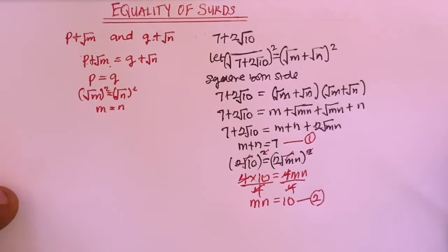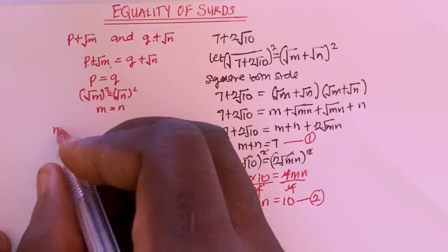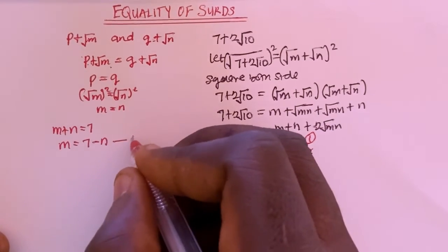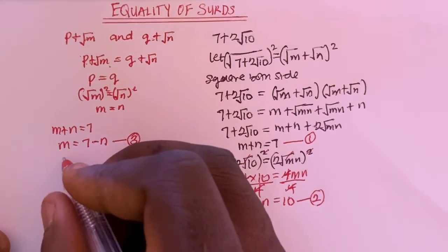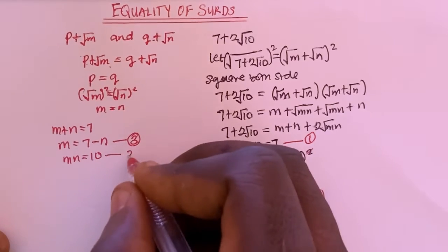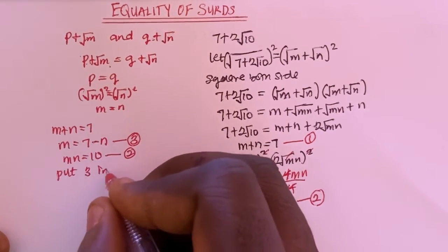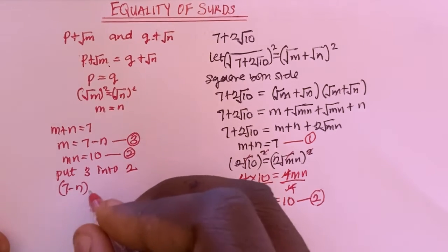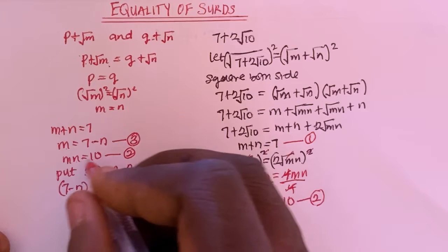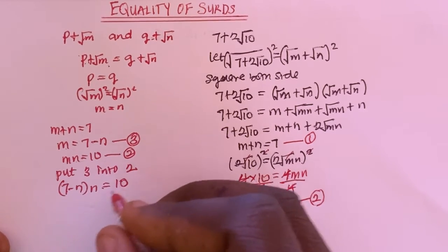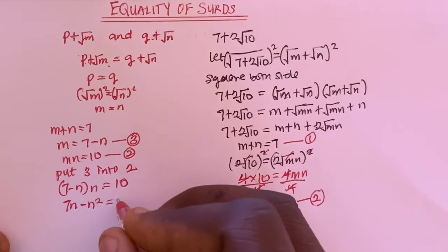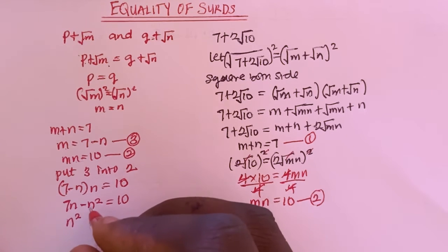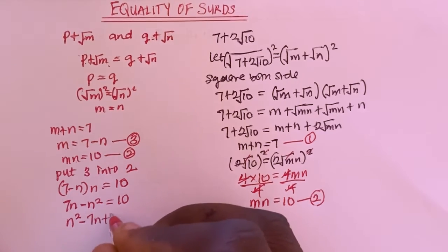From equation 1, I have M plus N equals 7, so I can say M equals 7 minus N. I'll call this equation 3. From equation 2, MN equals 10. I can substitute equation 3 into equation 2, so I'm going to have 7 minus N times N equals 10. Then I'm going to have 7N minus N squared equals 10.